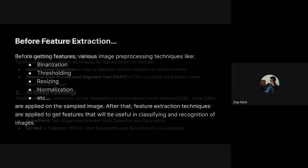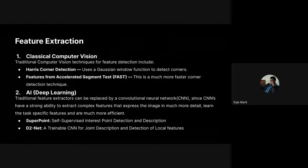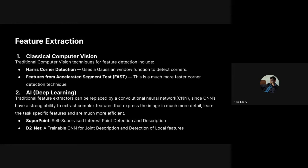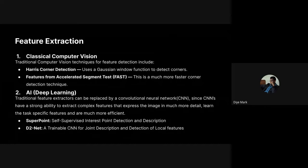There are two general types of feature extraction. The first is classical or traditional computer vision based feature extraction. The second is artificial intelligence or deep learning based feature extraction. In the traditional method, we have several algorithms and techniques — for example, Harris corner detection and related algorithms — used to detect edges or corners in an image.